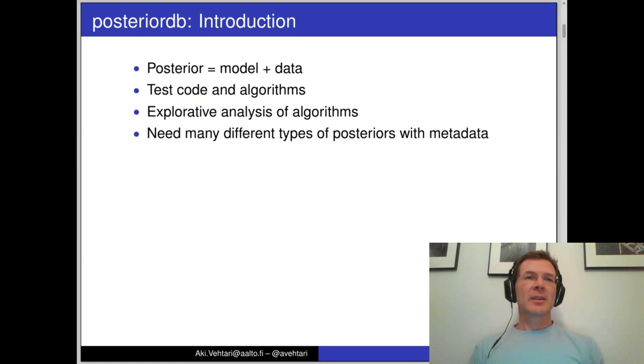Briefly, in PosteriorDB we have a database of posteriors, so one posterior is one model and specific data for that. The purpose is that we can use this when testing software code and algorithms and do explorative analysis of new algorithms or modifications. For this testing and exploration we need many different types of posteriors with some useful metadata.